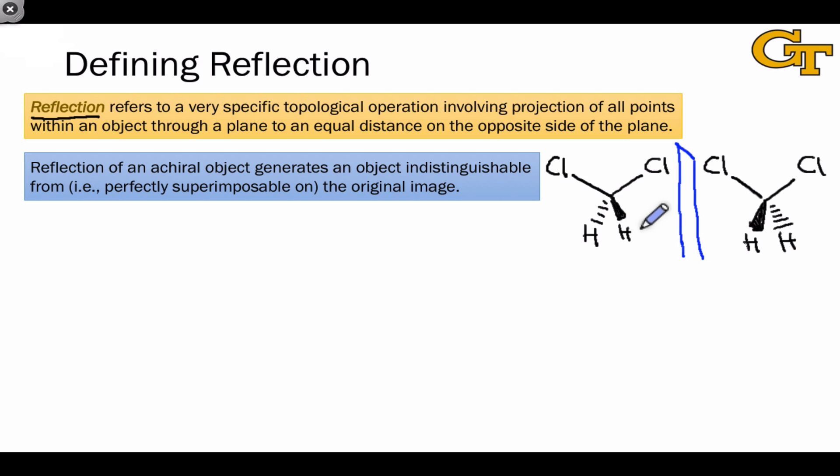Reflection involves taking each atom, projecting it onto the plane, and sending it out the other side of the plane at an equal distance. So the corresponding hydrogen to this one that I'm highlighting in blue in the reflected structure is this one here. What we've done is projected this hydrogen onto the plane and then sent it out the other side at an equal distance. Because this plane is perpendicular to the screen, this reflection doesn't change the height of the hydrogen above the plane of the screen, which is implied by the wedge. That's why it remains on a wedge after the reflection.